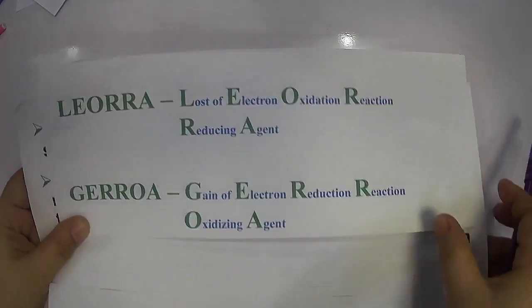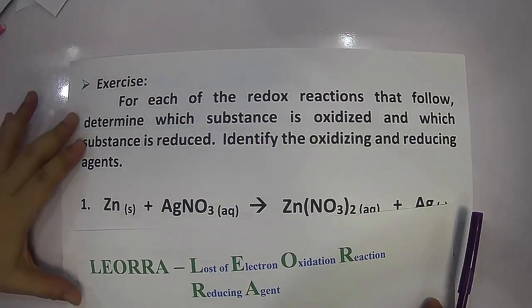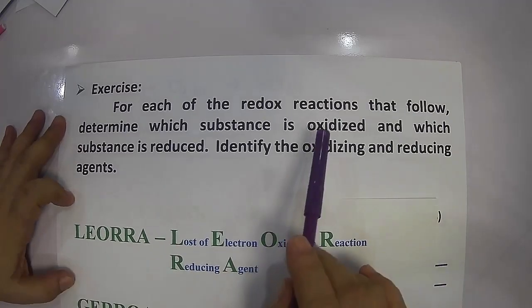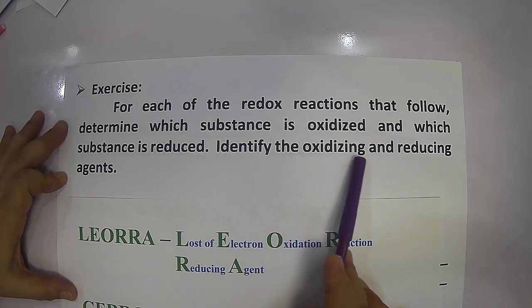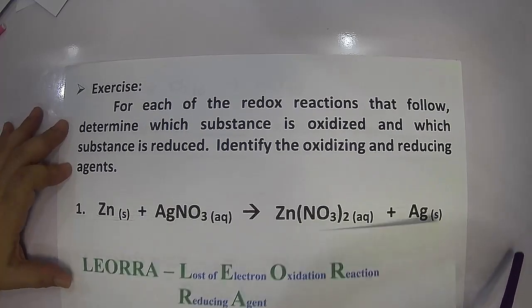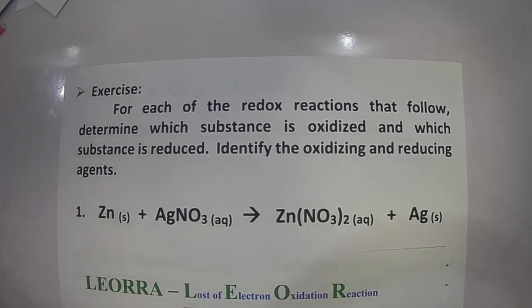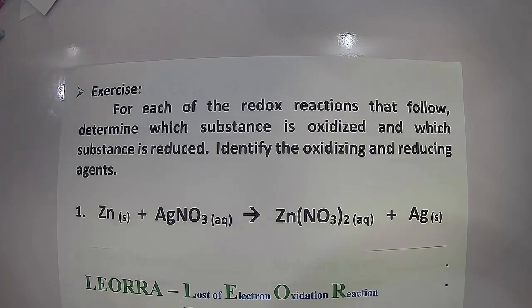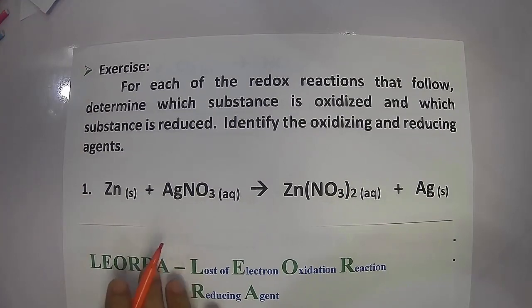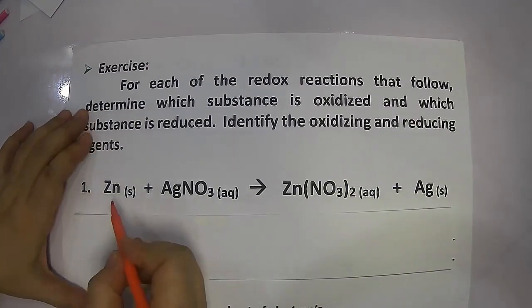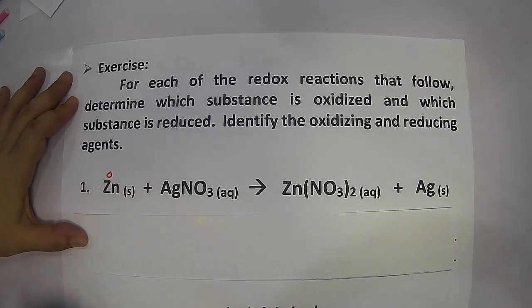Let's do an exercise to determine which substance is oxidized and which is reduced, then identify the oxidizing and reducing agents. Before you can do that, you have to assign the oxidation number of each element. Rule number one: an element in its elemental combined state has an oxidation number of zero. So, zinc alone as an element has a zero oxidation number.